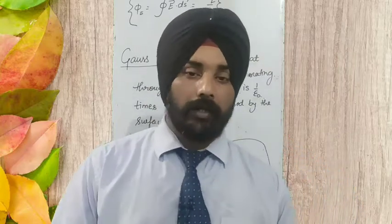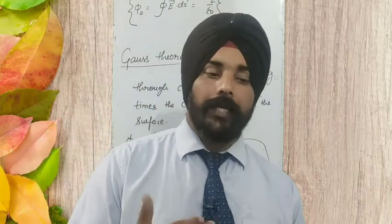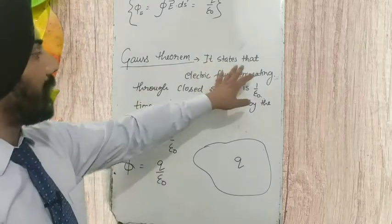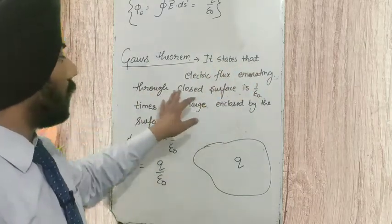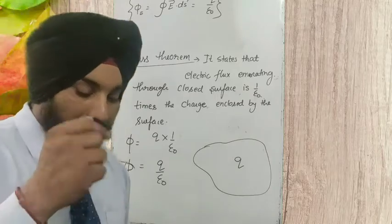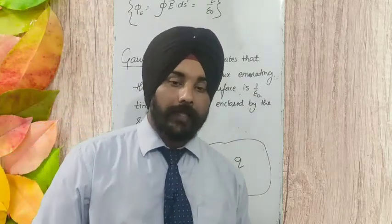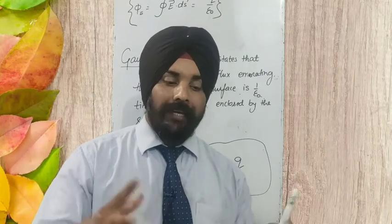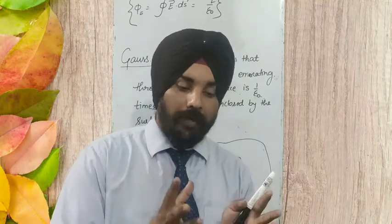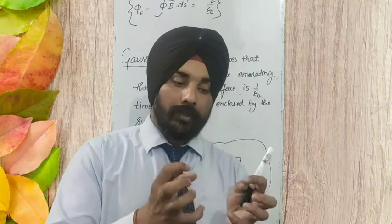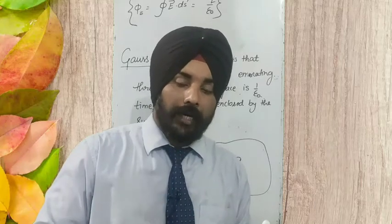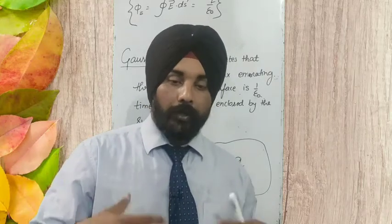So here I am going to state the Gauss theorem today, and we will solve the derivation also. Gauss theorem states that electric flux emanating through a closed surface is 1 upon epsilon naught times the charge enclosed by the surface. Any surface will emanate electric flux only when it has charge enclosed in it. Until it is not having a charge, it is not going to produce electric flux.